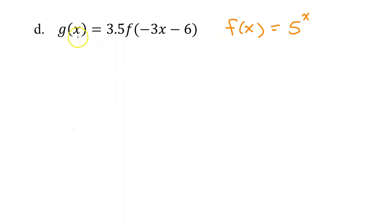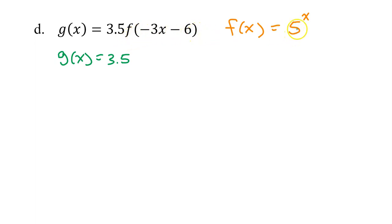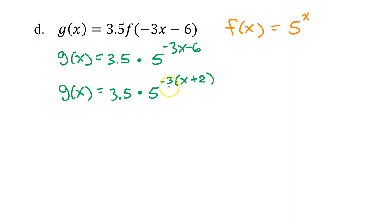Part D: g of x equals 3.5 times f at negative 3x minus 6. I have brought down the 3.5. Since f at x is 5 to the x, f at negative 3x minus 6 is 5 to the negative 3x minus 6 power. So we will have 3.5 times 5 to the negative 3x minus 6 power. To accurately determine the transformations happening in the exponent, we need to factor out the negative 3 in the front.